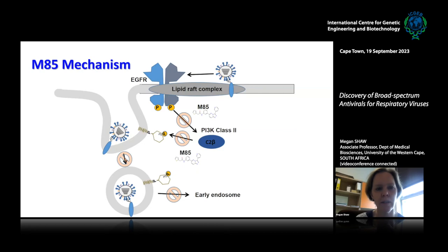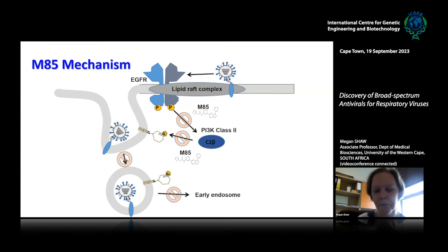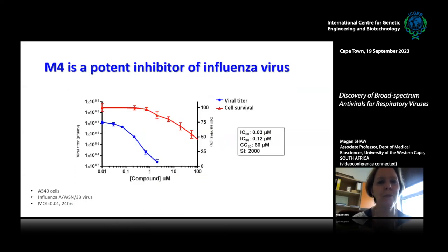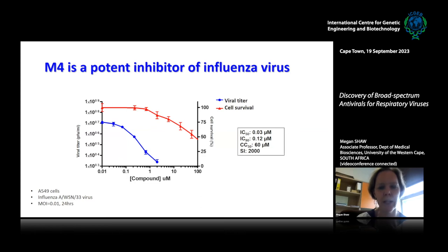The mechanistic conclusion for how M85 is acting is now established. Continued work on this compound is more in terms of medicinal chemistry to increase potency and bioavailability so we can move it into animal models. Now I'm going to focus on our other potential broad-spectrum compound discovered in the screen, called M4. It indeed has quite potent activity against influenza virus.